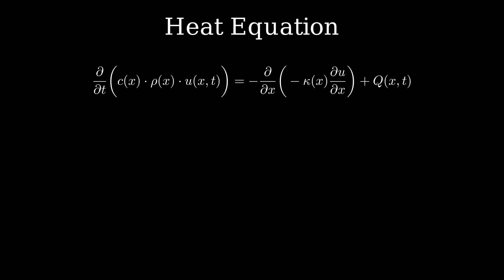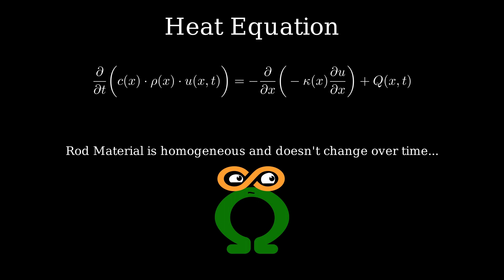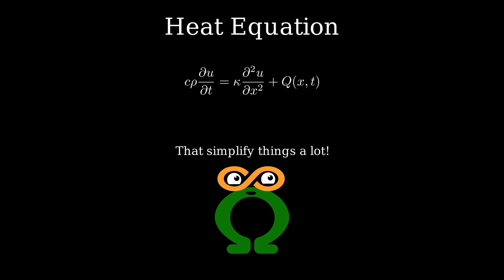Now that we have the equation in its glory, let's take a look at it in a little more detail. I'm going to make a very few reasonable assumptions and one of those is that the material is homogeneous and its properties does not change over time. What this does is allows us to move the coefficient safely outside the time and spatial derivatives.